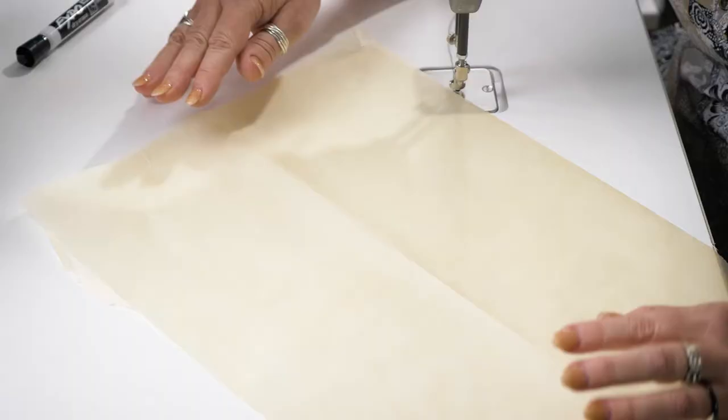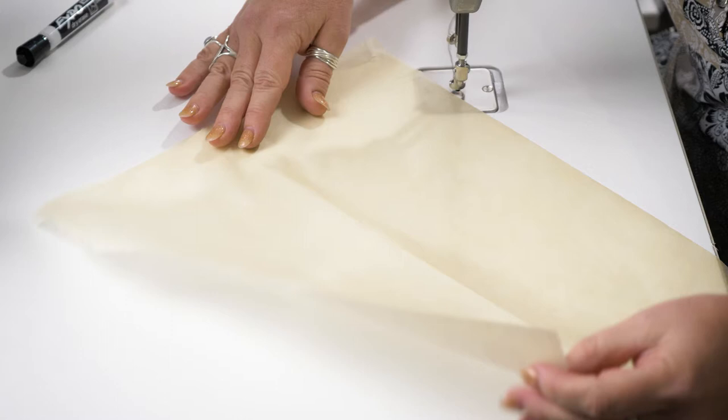And we're going to use a product called Golden Threads Paper. It's a wonderful, fairly thin tissue paper type of stuff. You rip off a length of this from the roll.